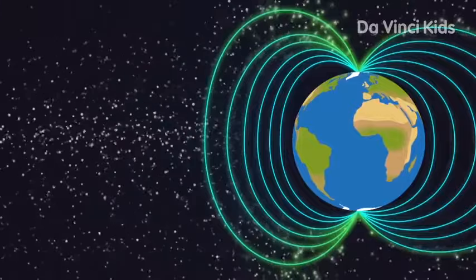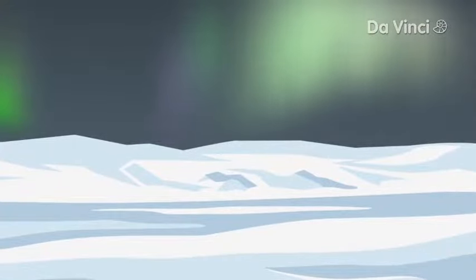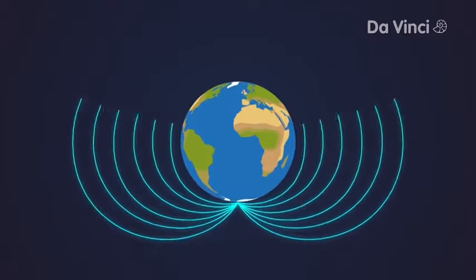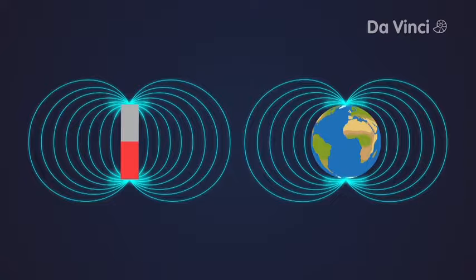These green glowing particles are the polar lights you can see in the sky around the poles. Like all magnets, our Earth has two magnetic poles where the magnetic force is the strongest.